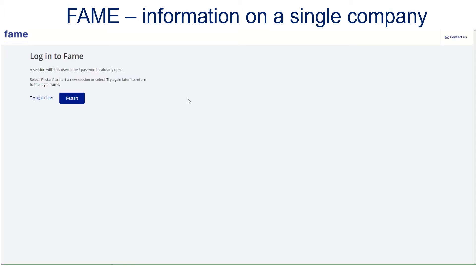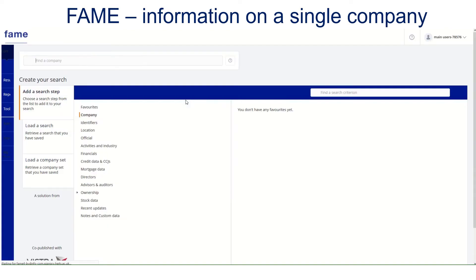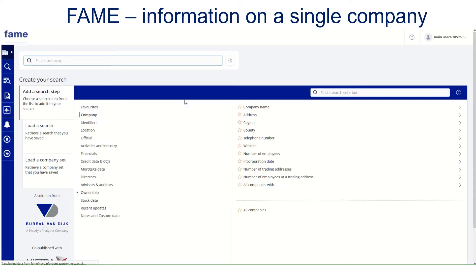FAME contains information on active and dead companies in Great Britain and Ireland, with historical depth going up to 20 years in the case of the larger companies.